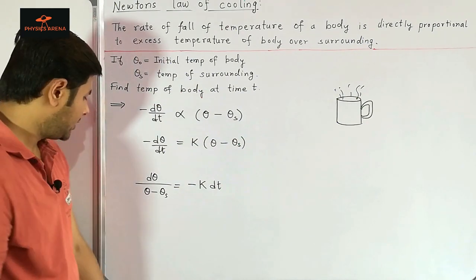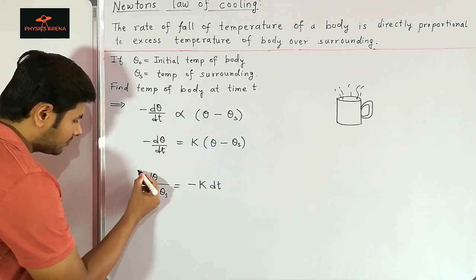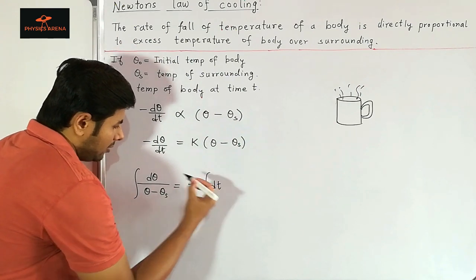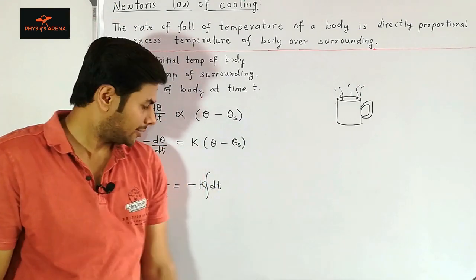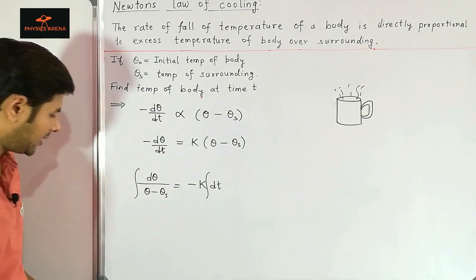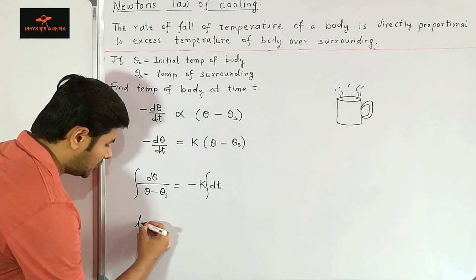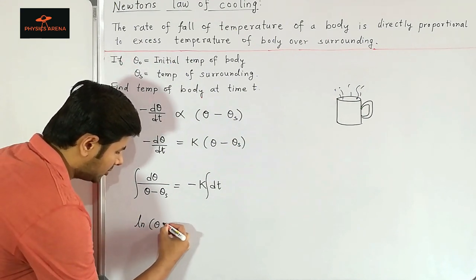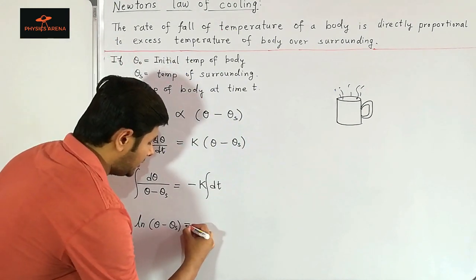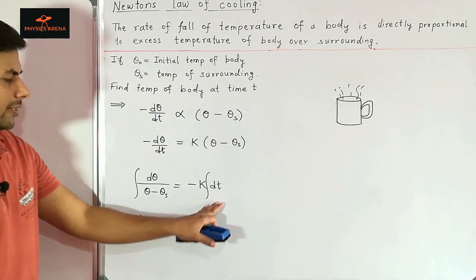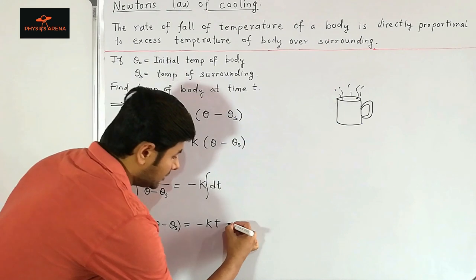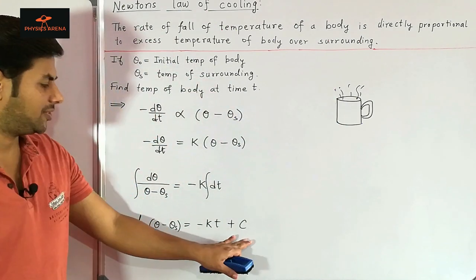We can rewrite this as: d theta divided by (theta minus theta s) equals minus k times dt. We can now integrate both sides. The integral of the left-hand side gives the natural log of (theta minus theta s), and the right-hand side gives minus k times t plus the constant of integration c.